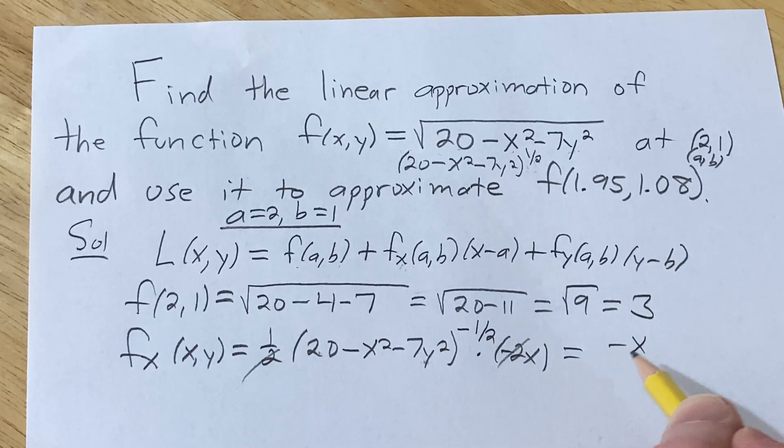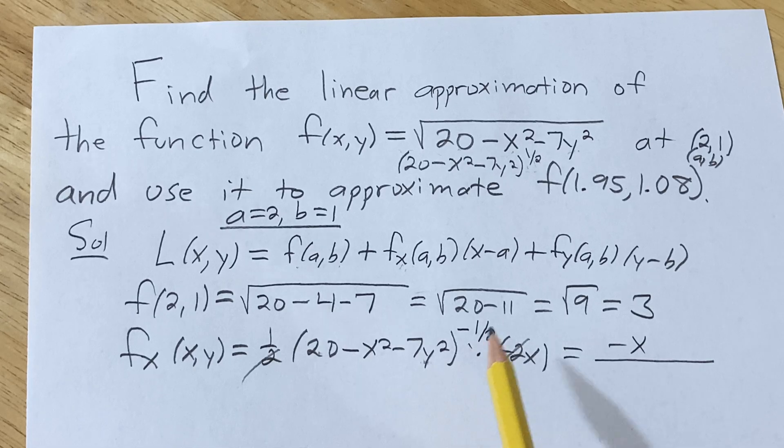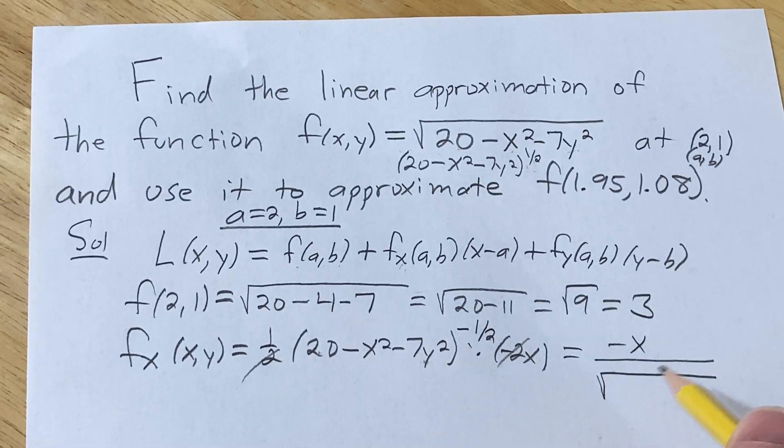These two cancel, we're left with -x over, you can bring this down, make the exponent positive, which becomes a square root. So it's the square root of (20 - x² - 7y²).